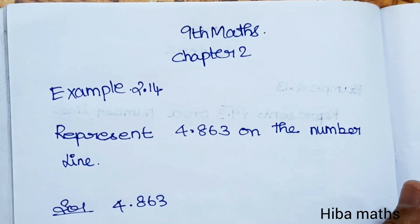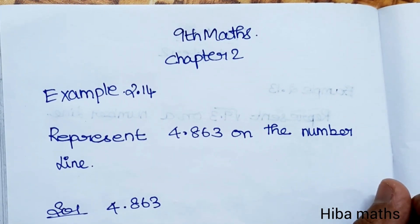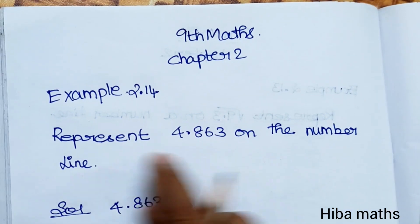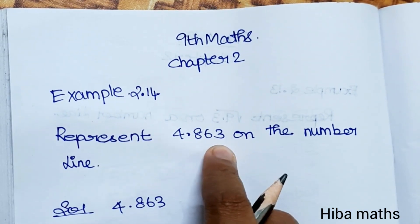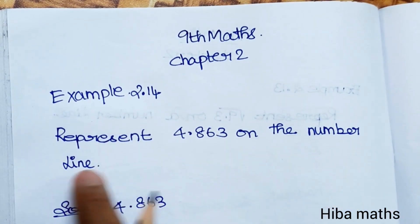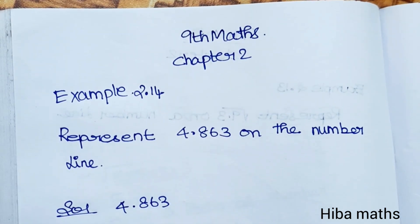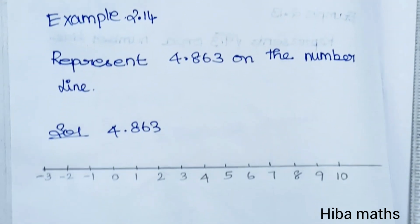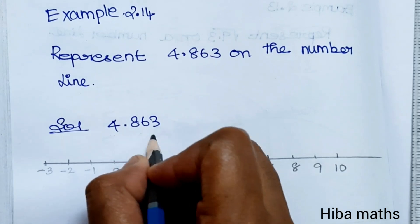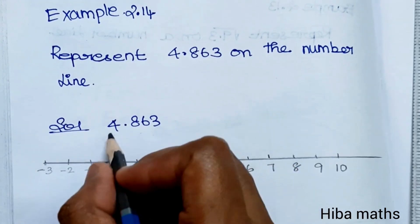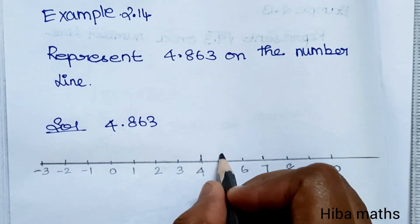Hello students, welcome to Hibamax 9 Standard Max Chapter 2 Example 2.14. Represent 4.863 on the number line. So, let's draw the value on the number line. The question is 4.863 — 4.8 lies between 4 and 5.